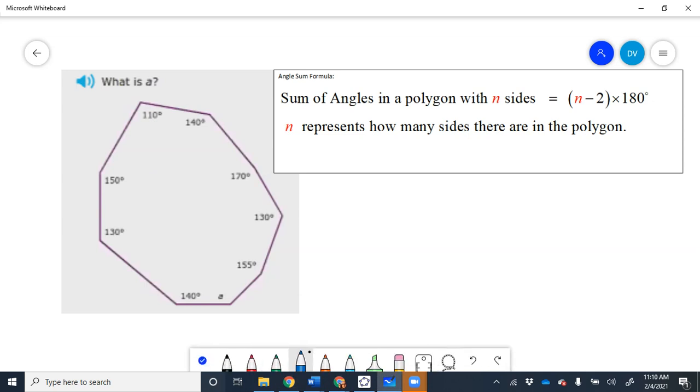n minus 2, this formula right here, n minus 2 times 180 degrees. So we need to know that, we need to remember that n represents how many sides there are in the polygon.